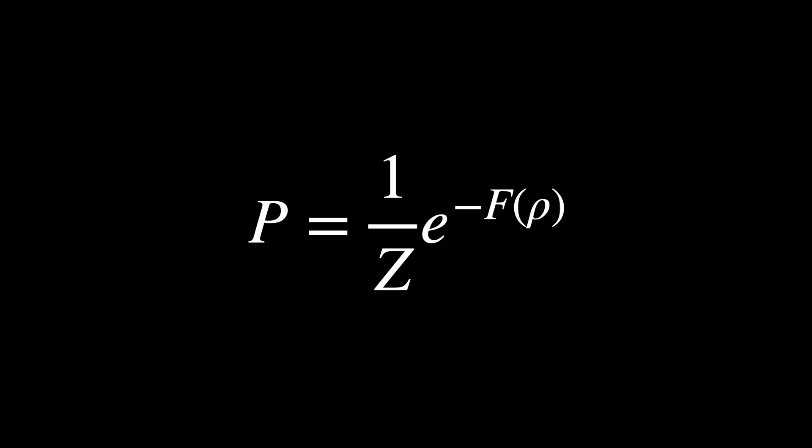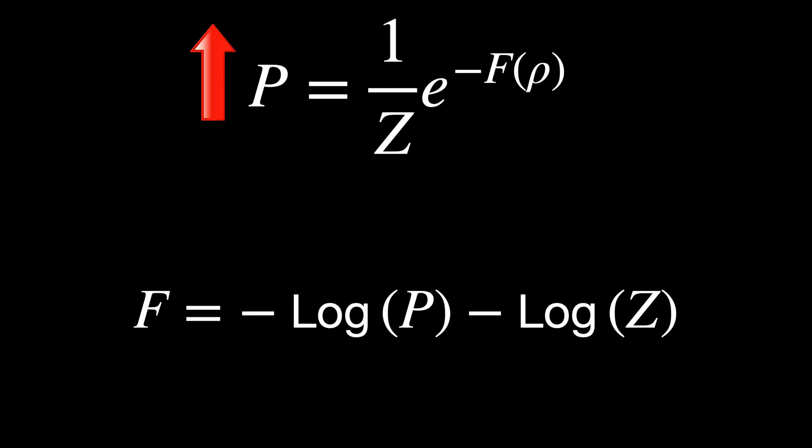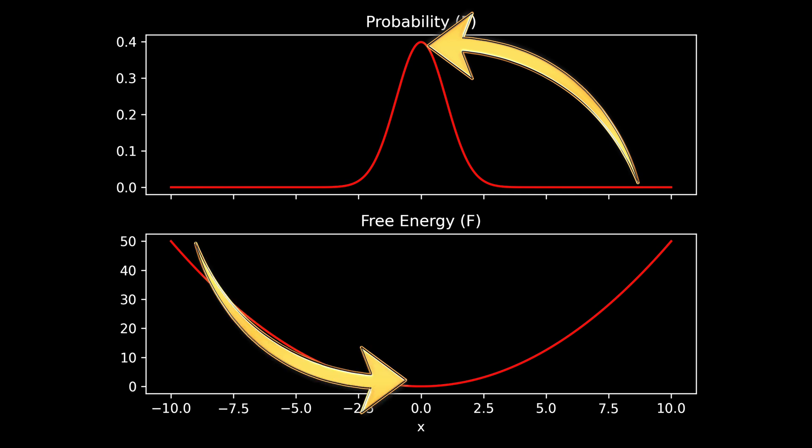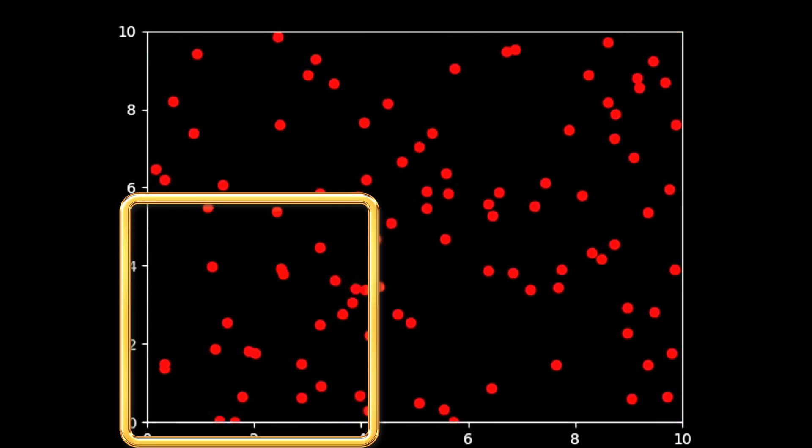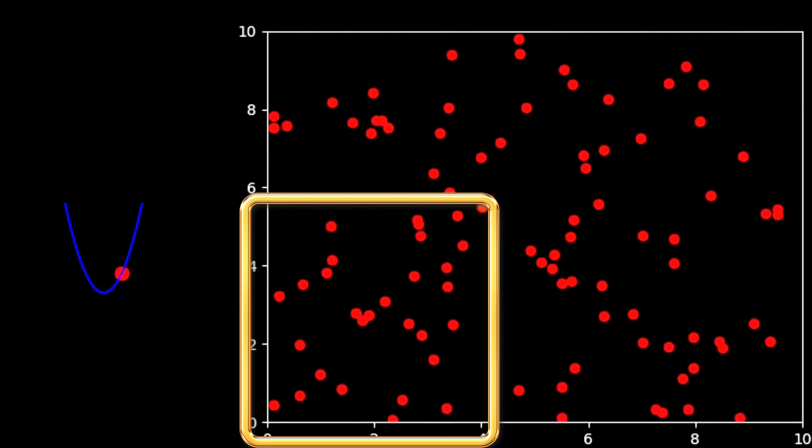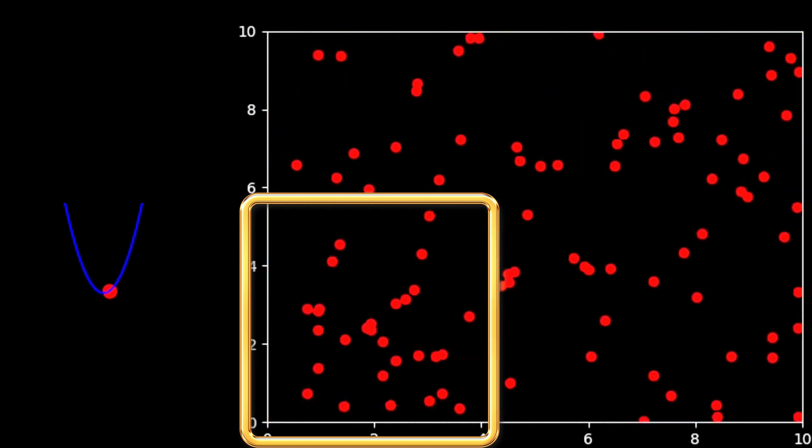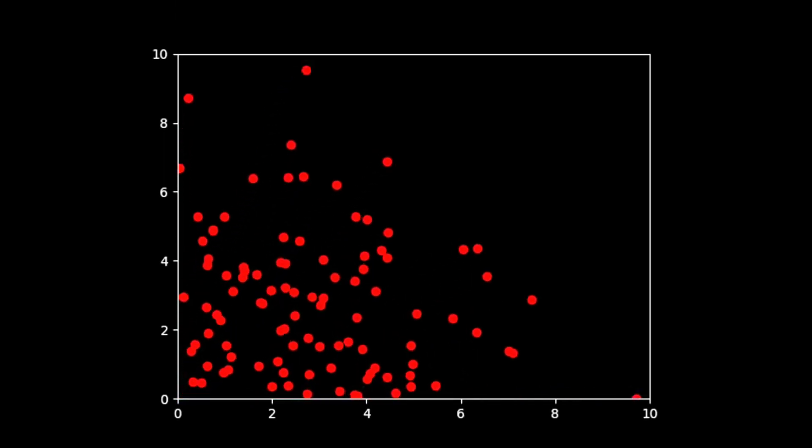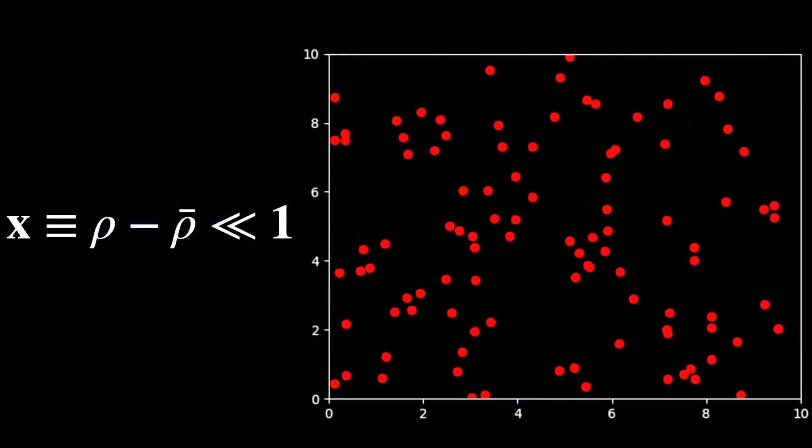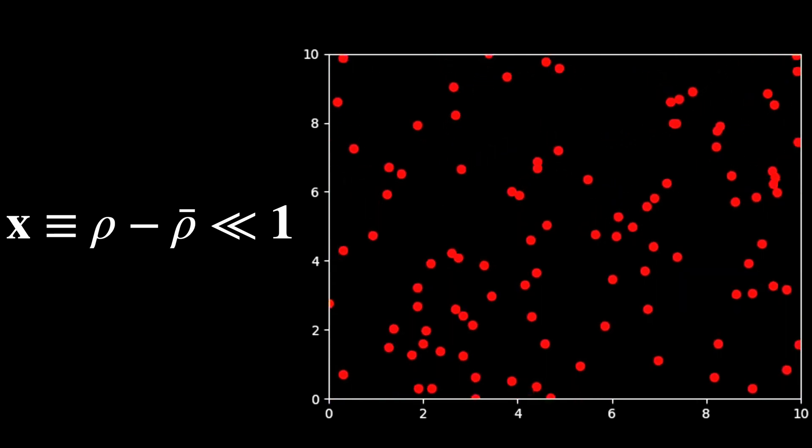What this animation is telling us is that the probability of finding a particle's density close to its mean is very high, and the probability of finding the density far from the mean is nearly zero. From the mathematical form of the god equation, we can immediately say that when probability is maximum, the effective free energy is minimum. So when the system is at equilibrium, it fluctuates around the minimum of its effective free energy, and the minimum happens to be at the mean of the variable.